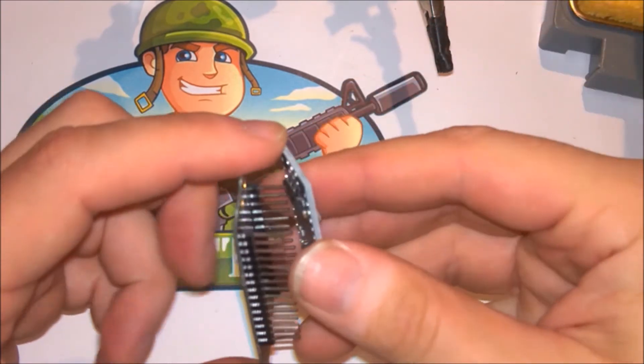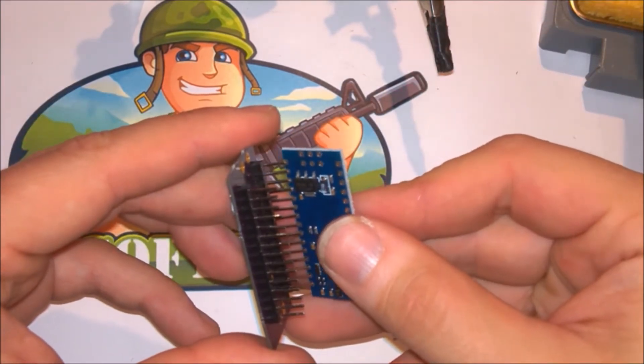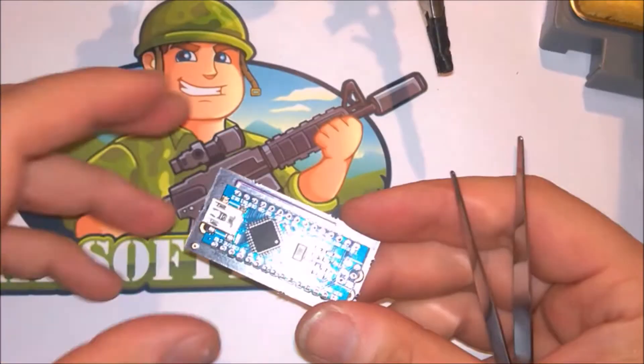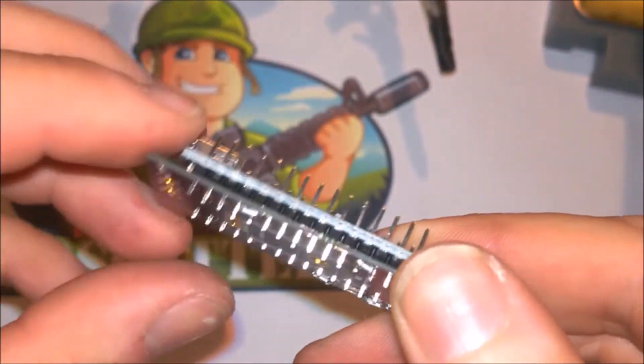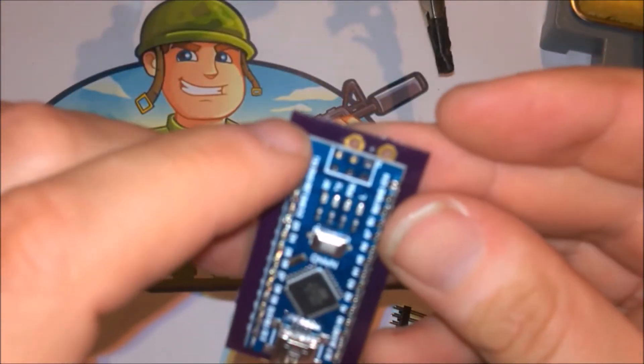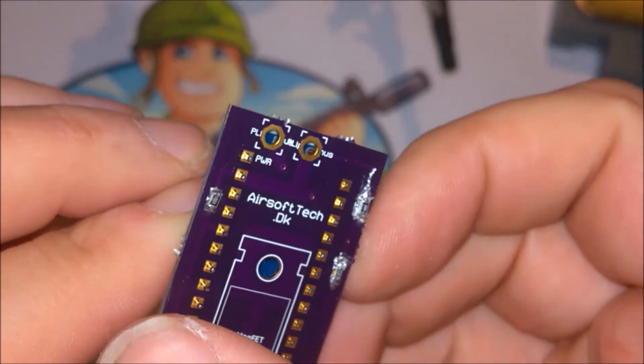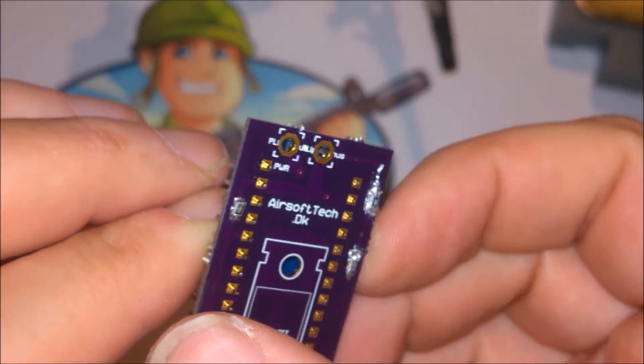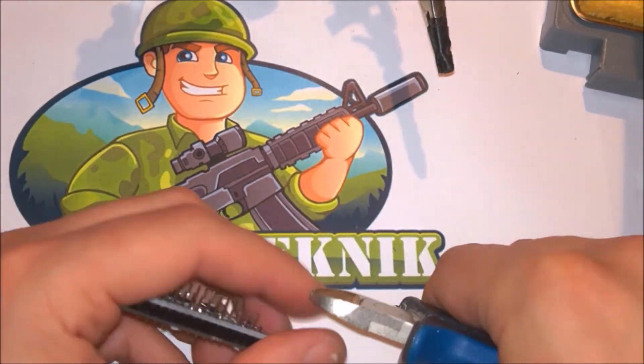And of course make sure you align the Arduino correctly so that the pins line up with the board just as they are supposed to. As you can see here the V-in and ground is aligned with the power connections on the back of the board.